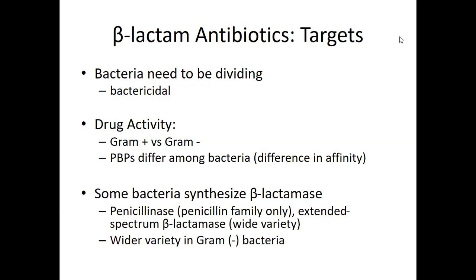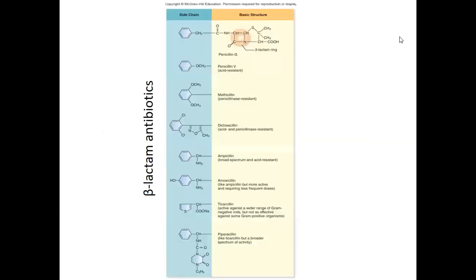You can give inhibitors of those enzymes along with the antibiotic to make them more effective — you're trying to interfere with the bacteria's ability to be resistant. Penicillin, the original beta-lactam antibiotic, was great at targeting gram-positive bacteria, but now because of modifications we can target gram-positive and gram-negative. Changing that side chain allows that antibiotic to work against different bacteria.